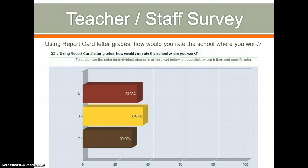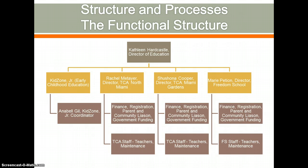Our teacher survey was also revealing. We asked the teachers to grade themselves and received a B — which means there's lots of room for growth. Other questions revealed that staff are not always comfortable approaching an administrator. If you remember the five disciplines of a learning organization, team learning and shared vision means we must do better at working together to make the best school and workplace for our students, parents, and teachers. We've been replicating many of the same processes across our different campuses.